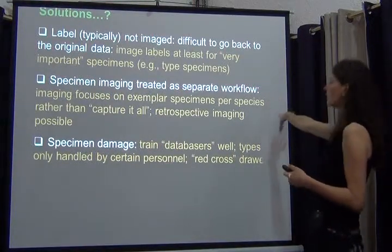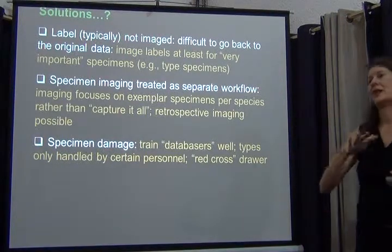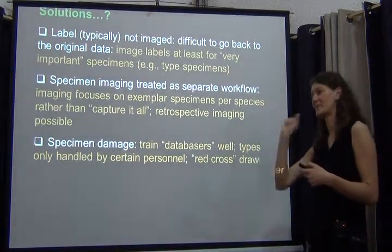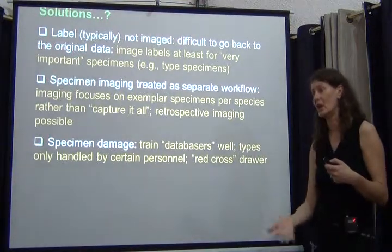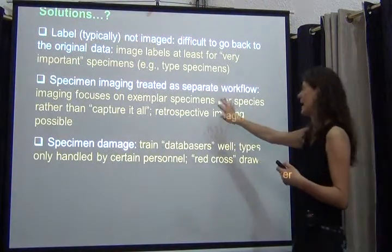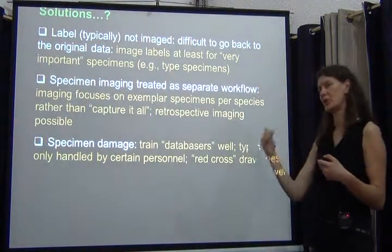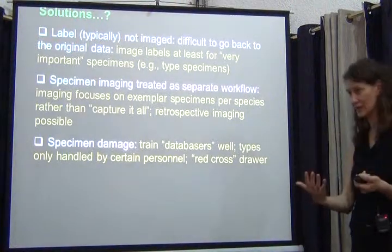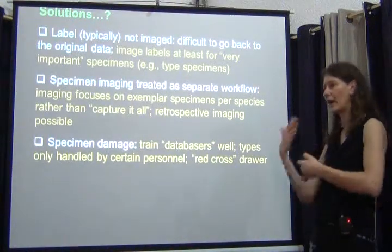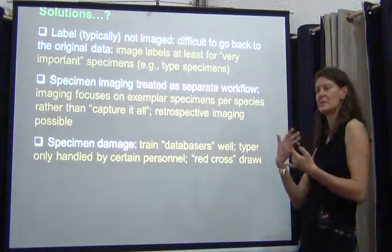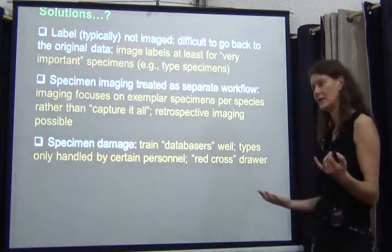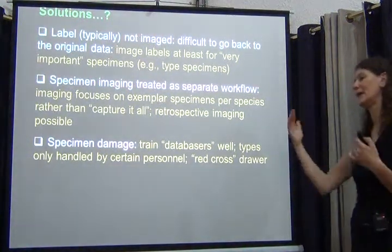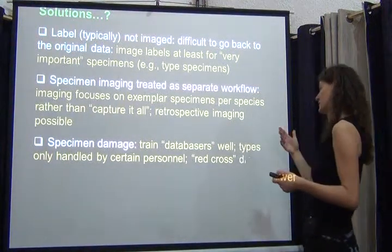Specimen imaging is a separate workflow. For the ADBC databasing project, we're really not interested in capturing every last single specimen as an image just because it would be a lot of work. What we're trying to do is get exemplar specimens imaged per species. It's not a perfect approach, obviously, because if you could take images of everything, it would be another check on the taxonomy — if something is misidentified, someone else could spot it. But it helps you get an idea of what that particular species looks like.